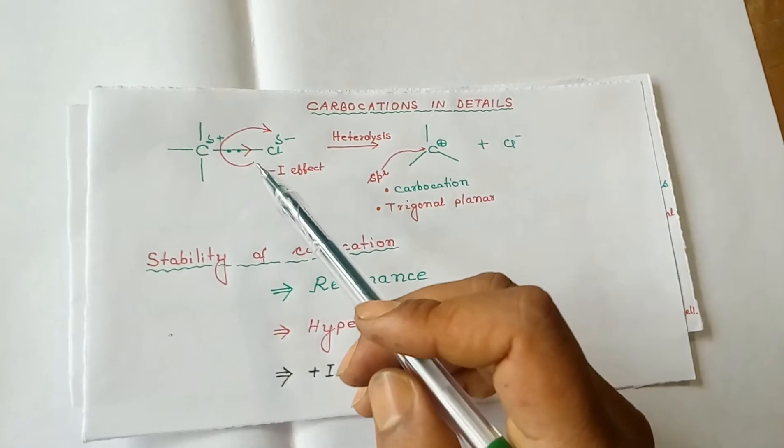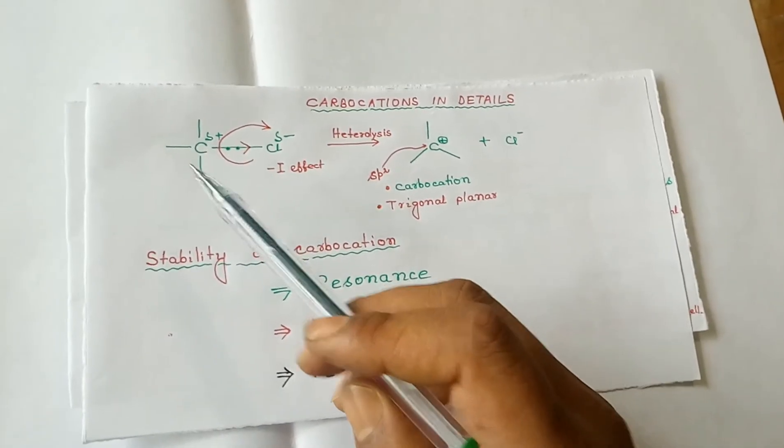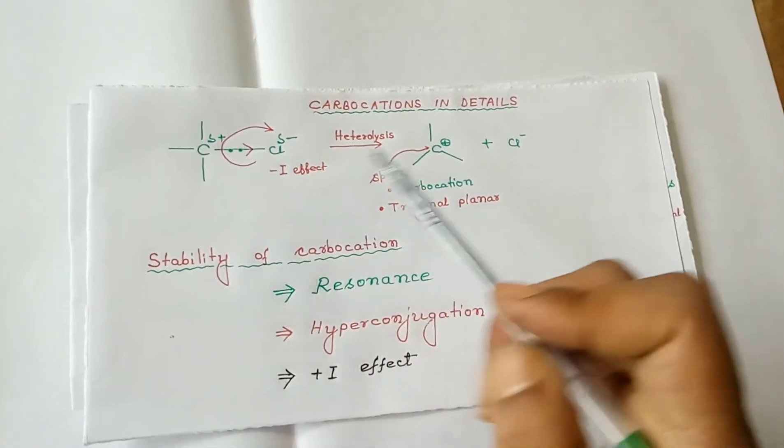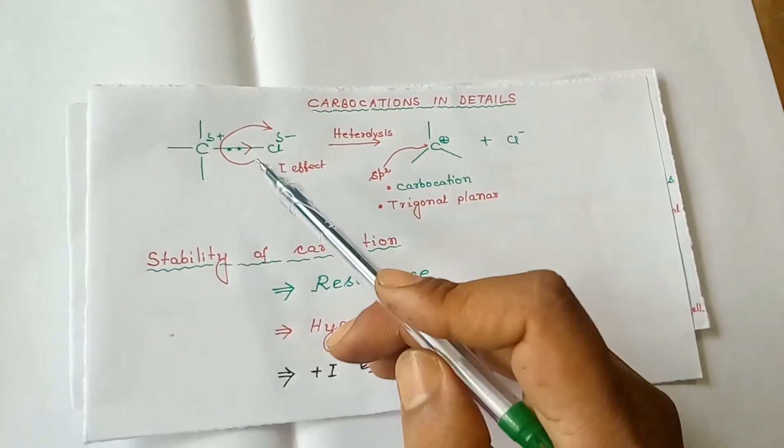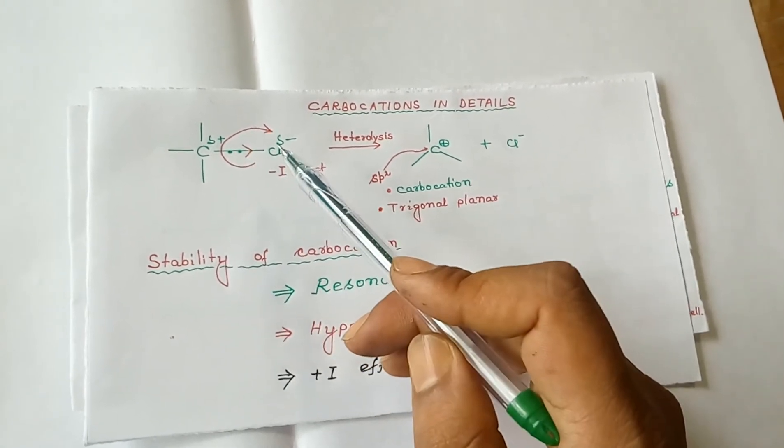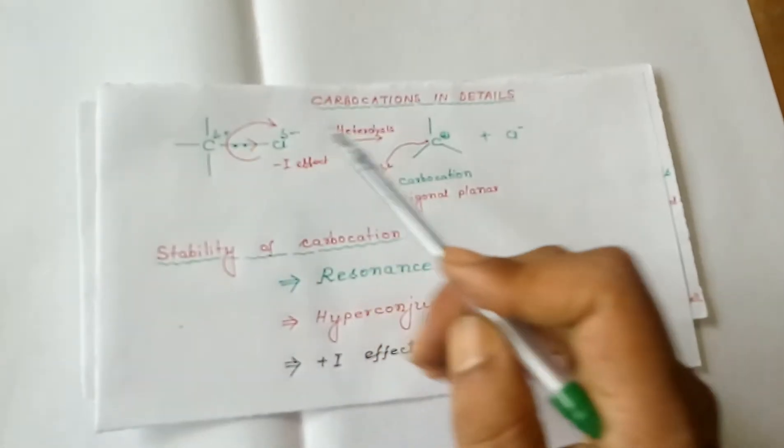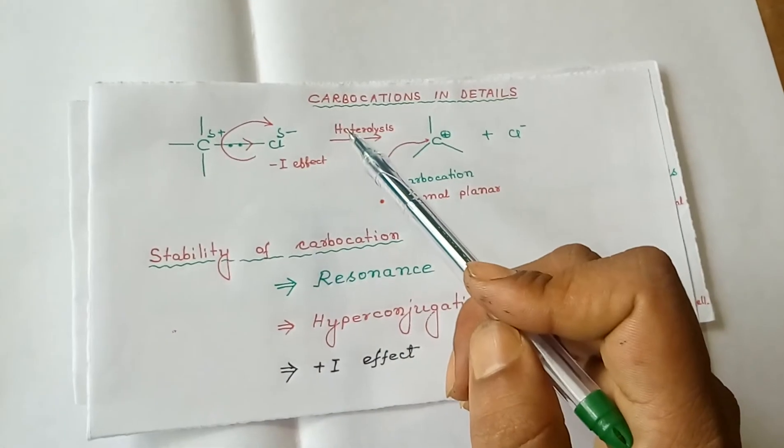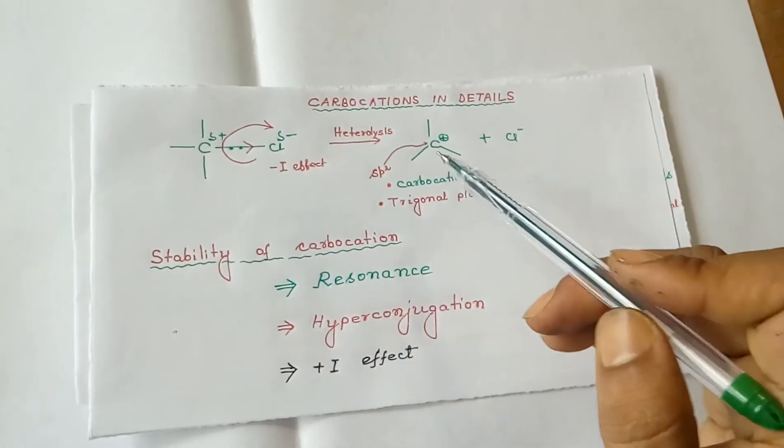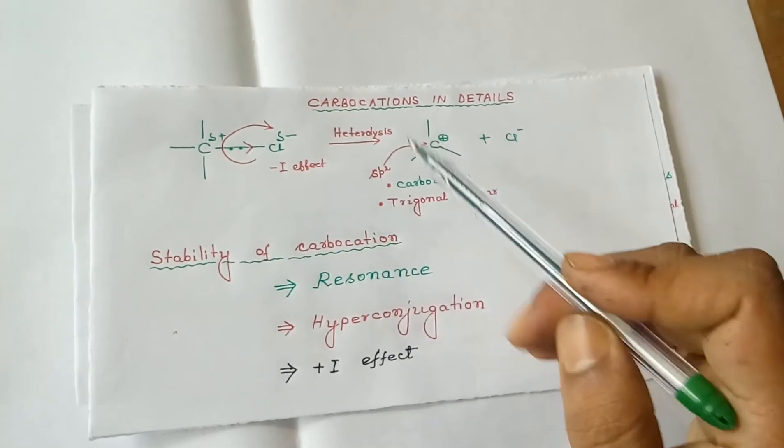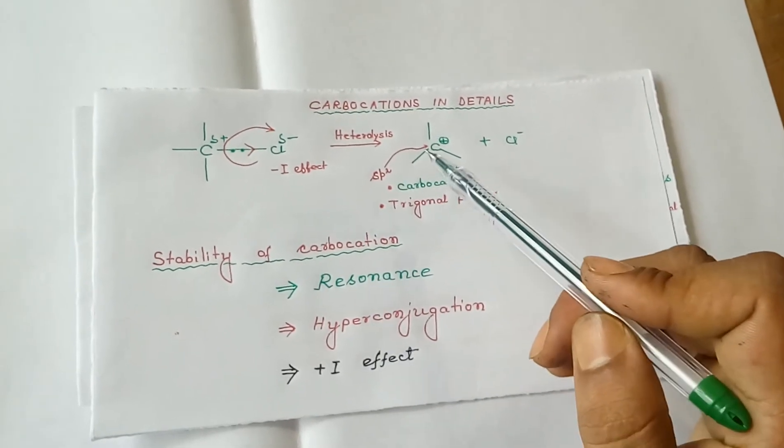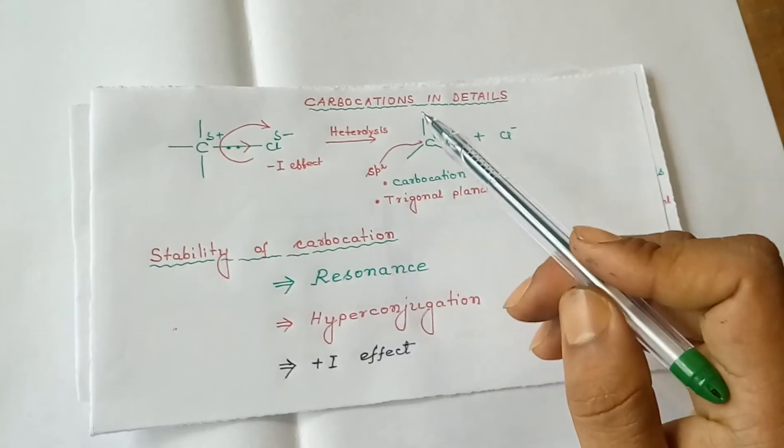Carbocations are generated by heterolytic bond cleavage of alkyl halide molecules. If chlorine takes the electron pair completely onto itself, this is heterolysis or unsymmetrical bond cleavage, giving us an ion pair. The carbocation has sp² hybridization and a trigonal planar shape.